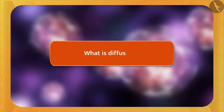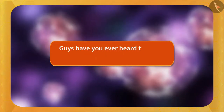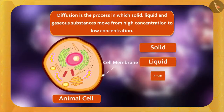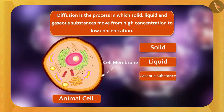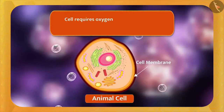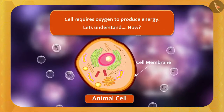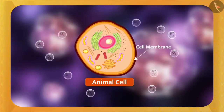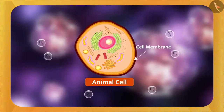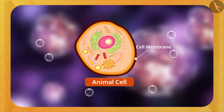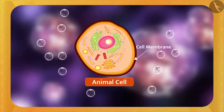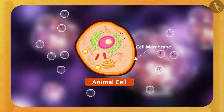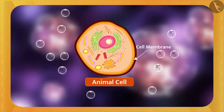What is diffusion? Have you ever heard the term diffusion? Diffusion is the process in which solid, liquid, and gaseous substances move from high concentration to low concentration. For example, cell requires oxygen to produce energy. When the oxygen gas molecules reach the cell with the blood, the concentration of oxygen molecules outside the cell becomes higher than inside. So, diffusion will occur — the oxygen molecules move from outside to the inside of the cell.